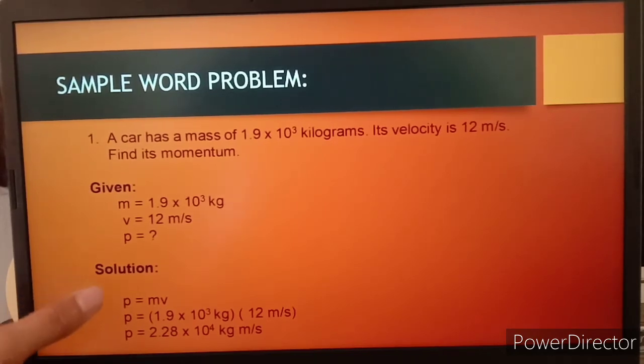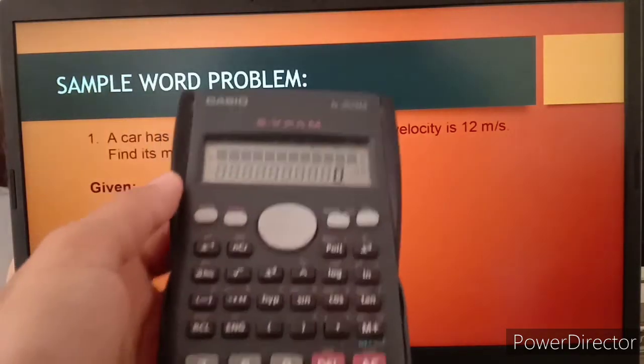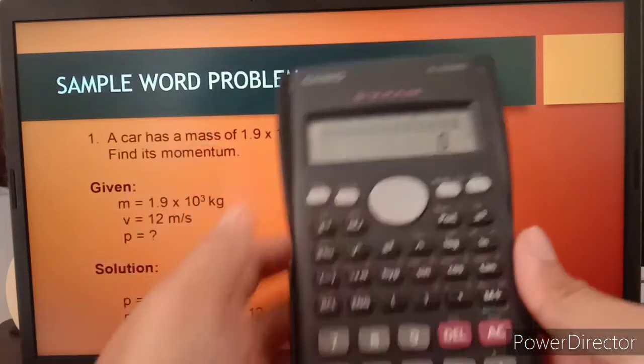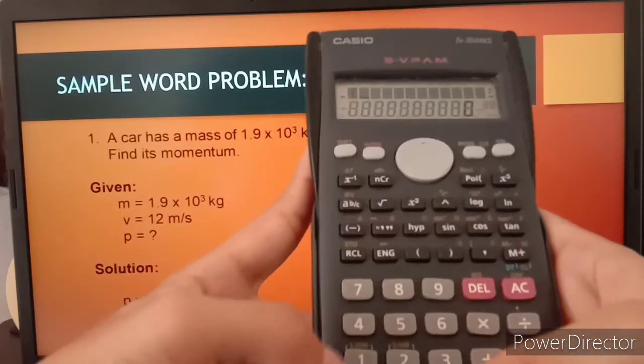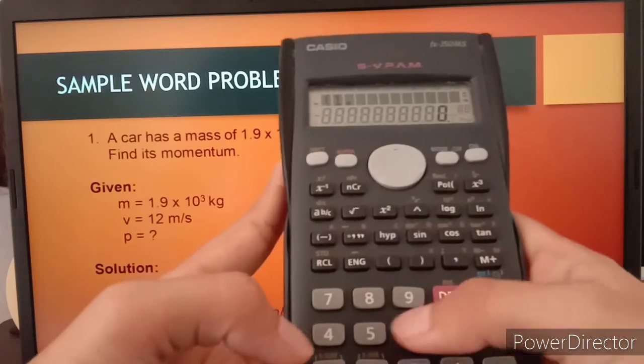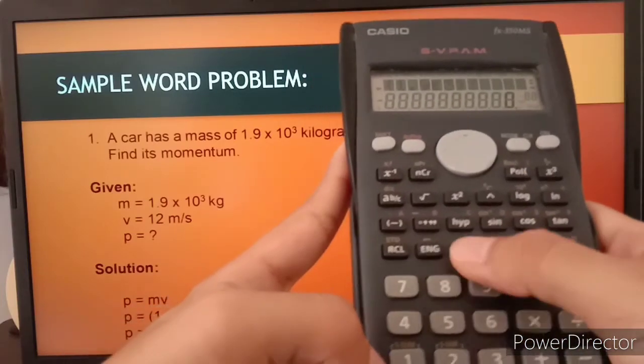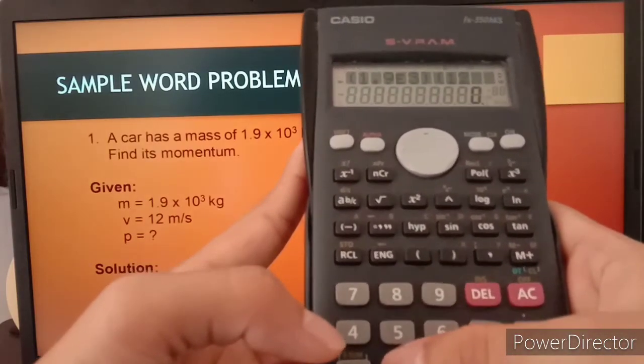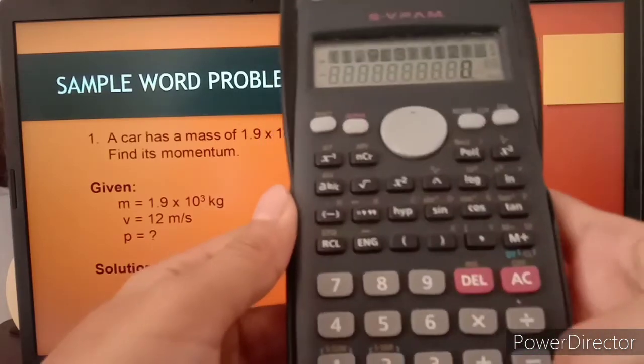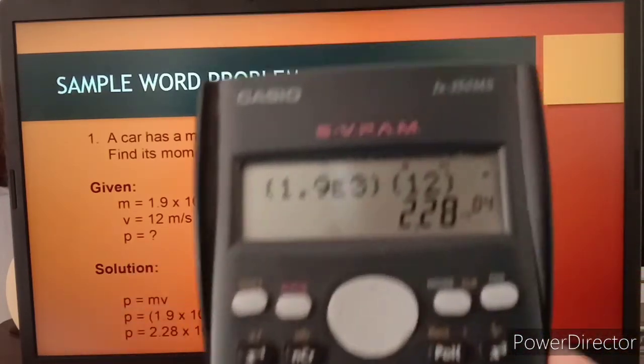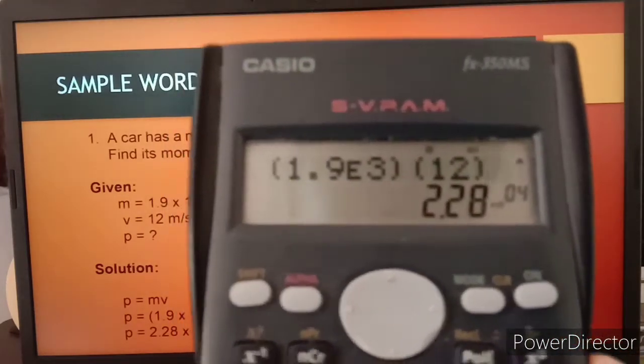Next, we're just going to substitute the given values: 1.9 times 10 raised to 3 kilograms multiplied by 12 meters per second. Using a calculator, we have 1.9 times 10 raised to 3 multiplied by 12. The final answer is equal to 2.28 times 10 raised to 4.